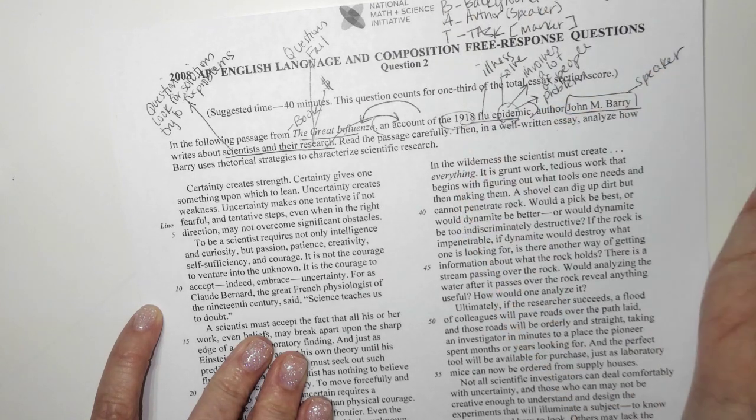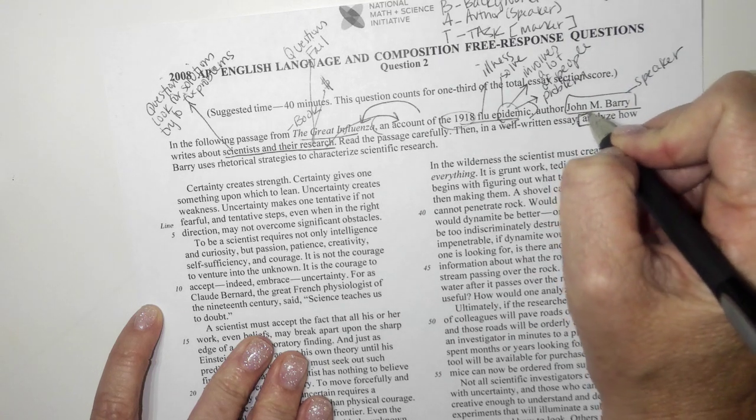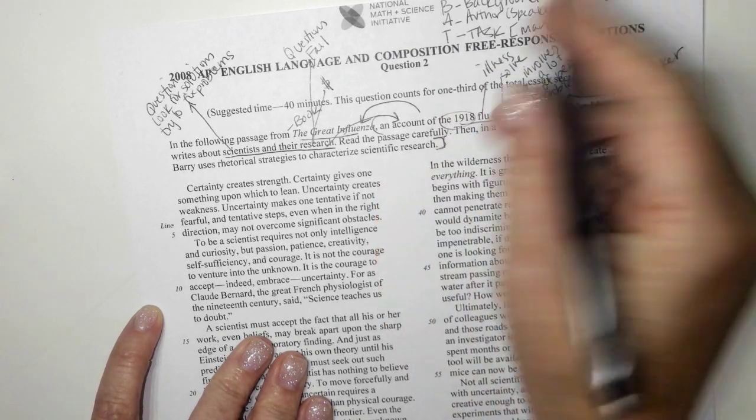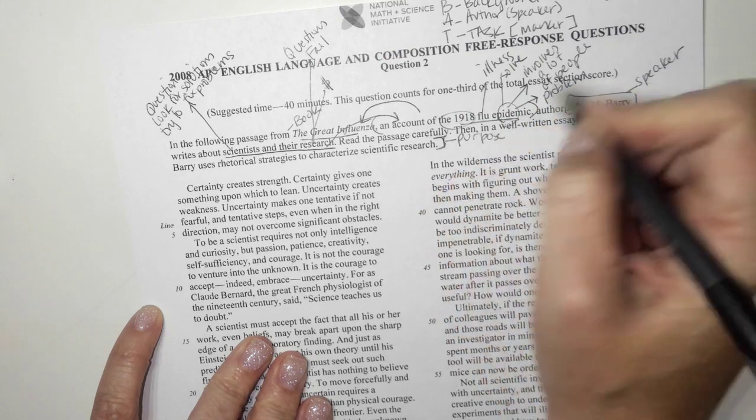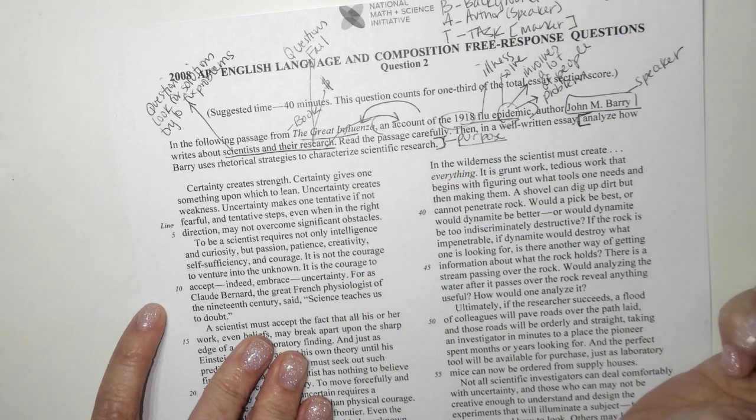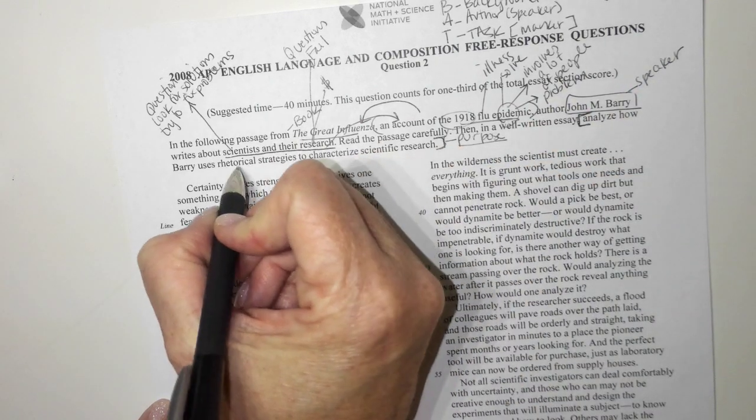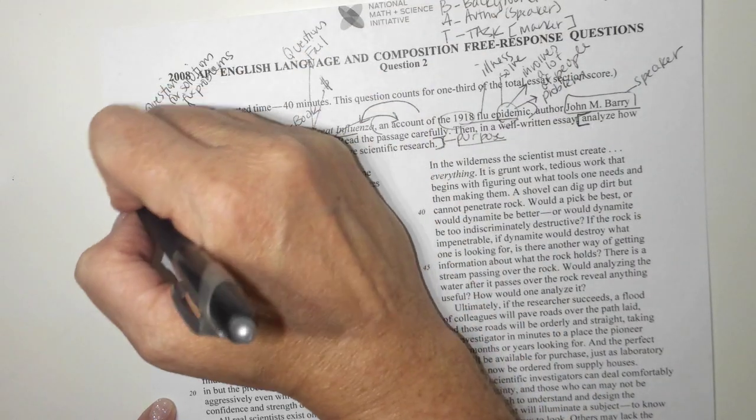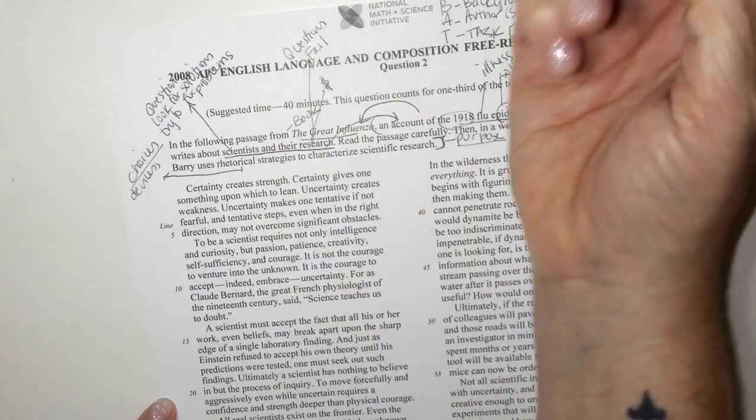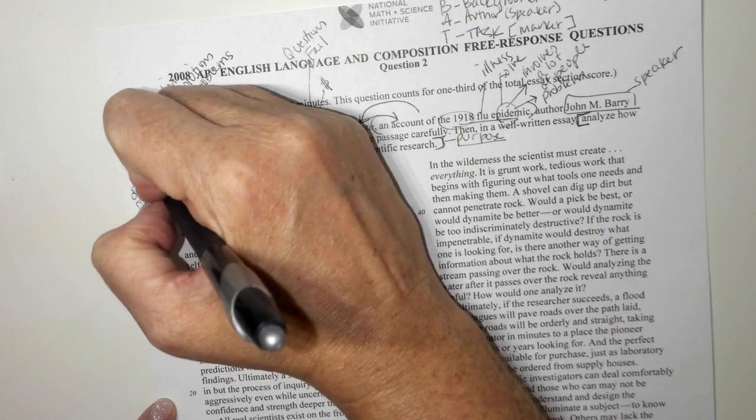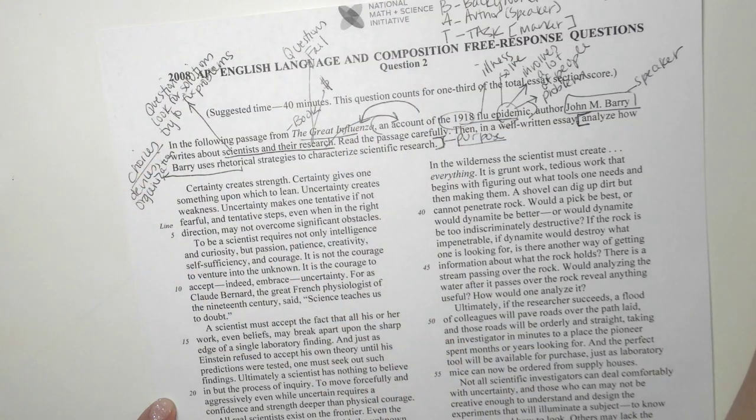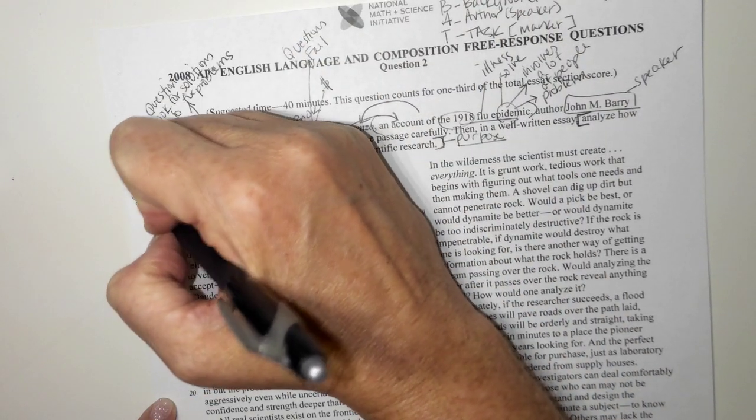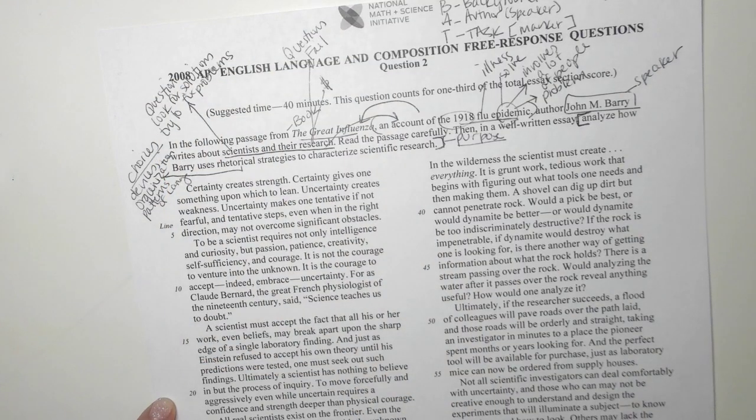So then, we've got the background and the author. So we've batted the prompt. Now we need to look at the task. Analyze. This is our marker verb. How Berry uses rhetorical strategies to characterize scientific research. So what we're always looking at is we're looking for our big purpose. And usually we don't find it in here. So when we look at rhetorical strategies, these are all going to be choices. So we're not only looking for devices. We are looking for organization. We are looking for patterns of language.